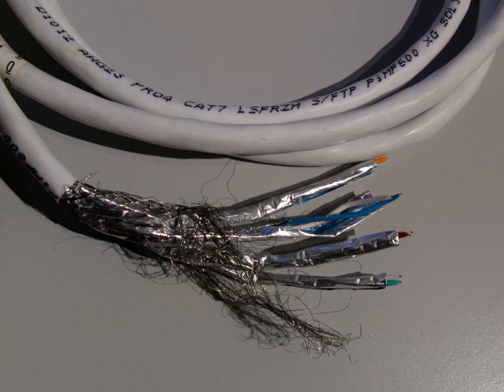OM-4: multimode fiber type 50 micrometers core, minimum modal bandwidth of 4700 MHz km at 850 nm. OM-5: multimode fiber type 50 micrometers core, minimum modal bandwidth of 4700 MHz km at 953 nm.